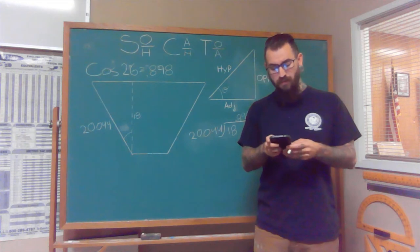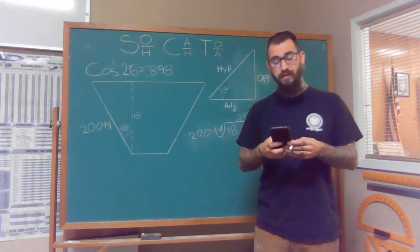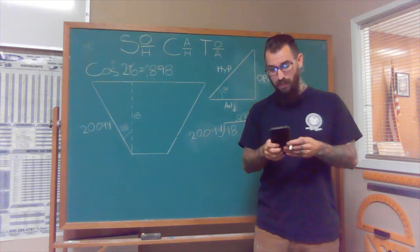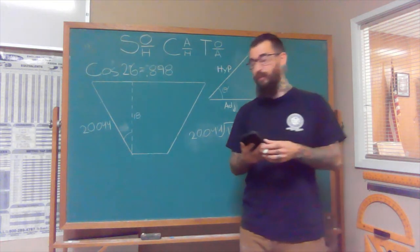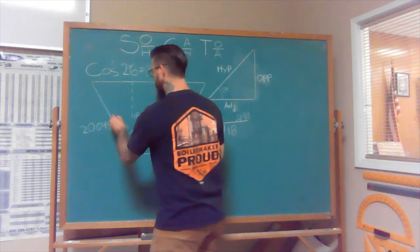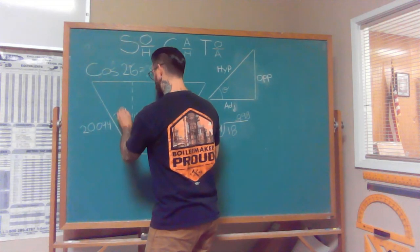So I have the inverse cosine. So you want to hit C-O-S negative one of 0.898. And that gives me 26.1.